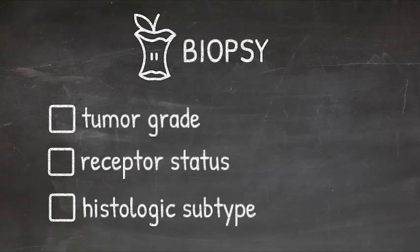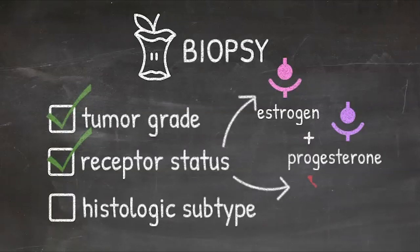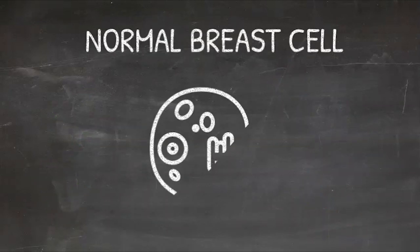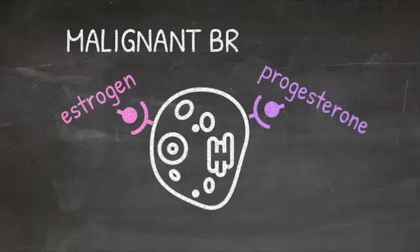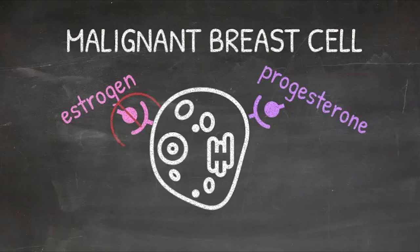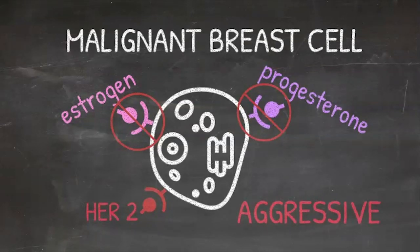Core biopsies provide information and enough information for us to subtype the cancer. We learn the tumor grade, hormone receptor status for estrogen and progesterone, and the HER2 status. We also learn the histologic subtype, and then we can understand whether this is an aggressive or a more favorable cancer. A normal breast cell has receptors on it for estrogen and progesterone, so when it loses this differentiation, the more de-differentiated a cancer is, the more aggressive it is. And we also know that patients whose tumors are HER2 positive are far more likely to metastasize.